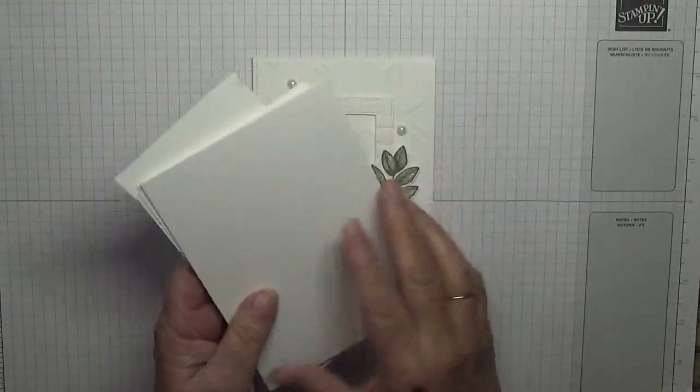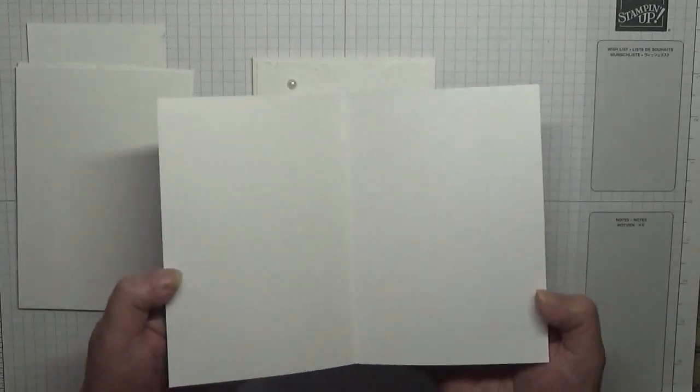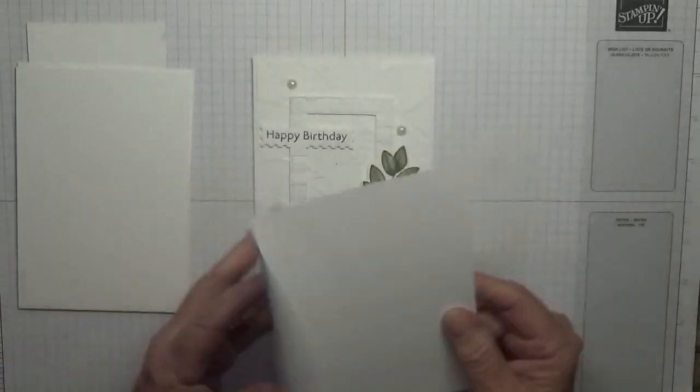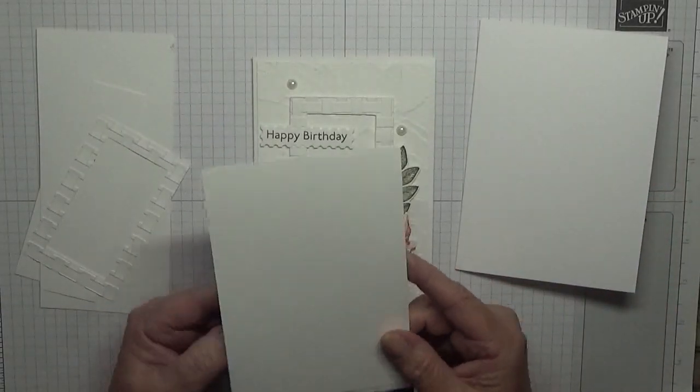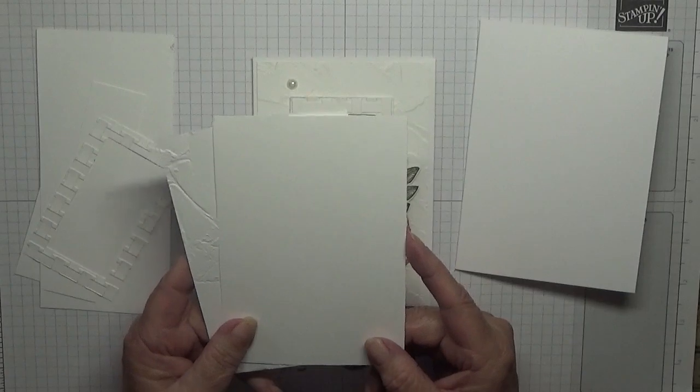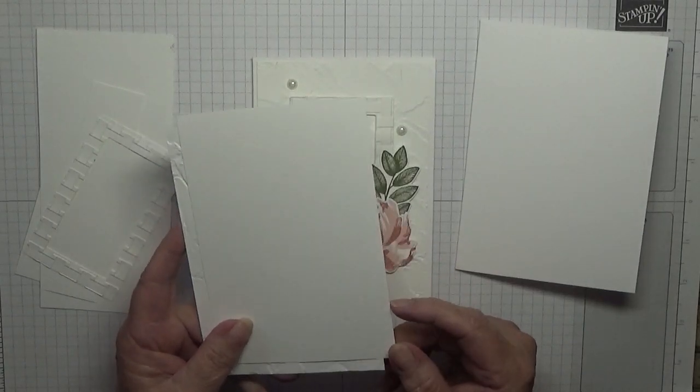For the card I have got a card base of eight and a quarter by five and seven eighths scored at four and one eighth. I have two pieces of white cardstock at five and five eighths by three and seven eighths.